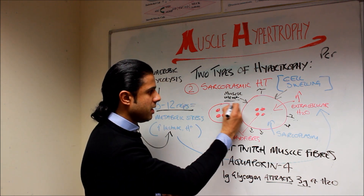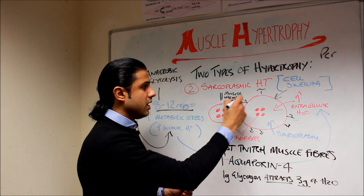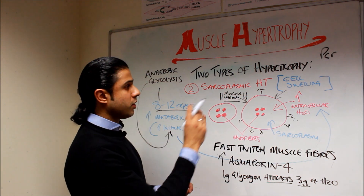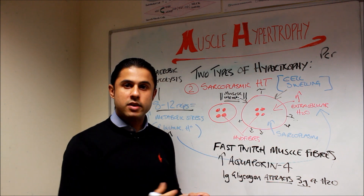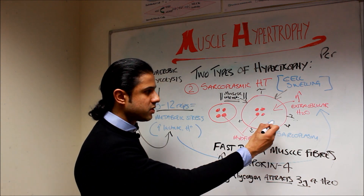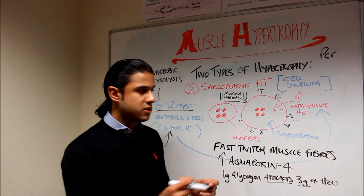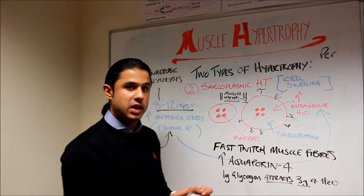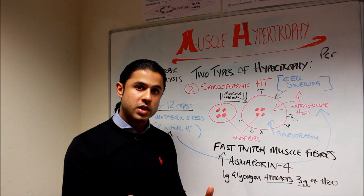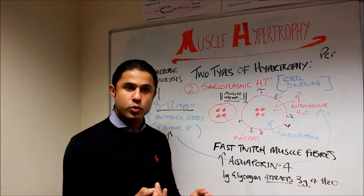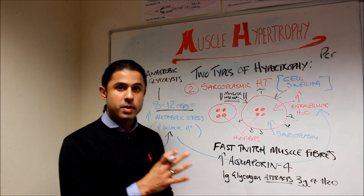What I've just described about the muscle membrane is still being researched — the evidence for this is not as strong as it is for myofibrillar hypertrophy and the adding of sarcomeres in parallel. This is still a very new area where scientists are trying to understand more about what cell swelling does for increasing myofibril size. Certainly though, it seems plausible that if you have an increase in extracellular water, the cell will adapt and try to protect itself, leading to an increase in myofibrillar hypertrophy.